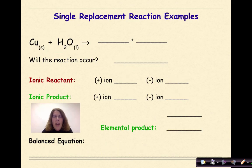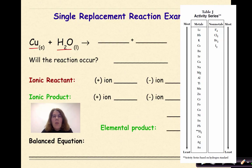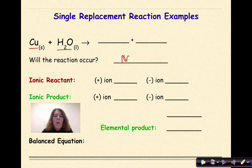Let's look at our last reaction. CU plus H2O. Will this reaction occur? So again we look at table J, we find the location of CU, we find the location of H and we realize that CU is lower on table J than H is. So will this reaction occur? No it will not.